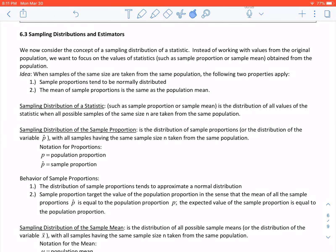We are in section 6.3, sampling distributions and estimators, so we can now consider the concept of sampling distributions of a statistic. Instead of working with values from an original population, we want to focus on the values of a statistic, such as sample proportion, sample mean, or sample standard deviation, but sample proportion and sample mean are the two that we use the most.